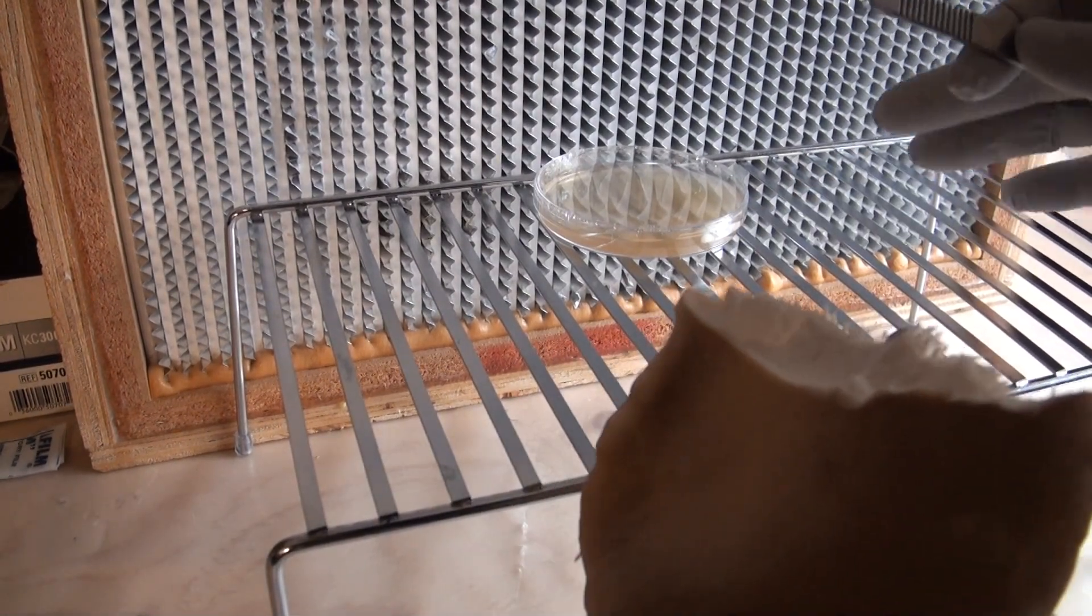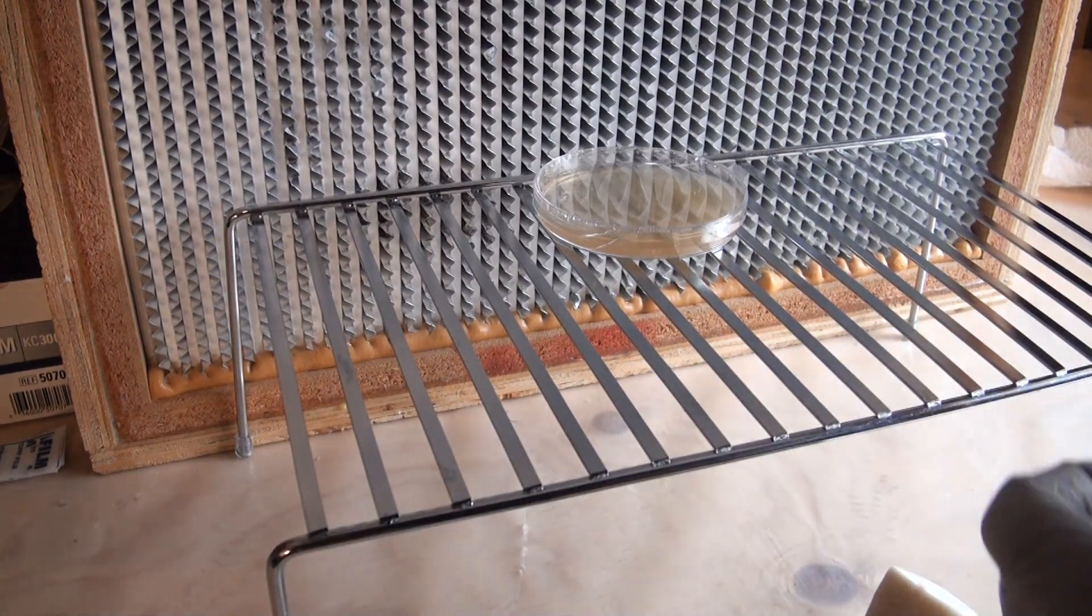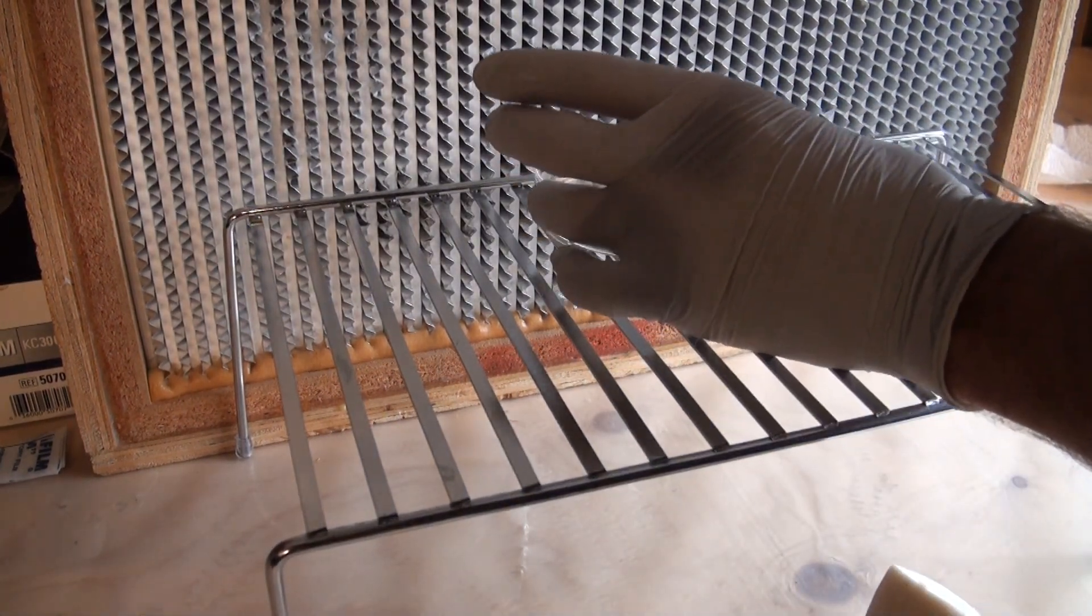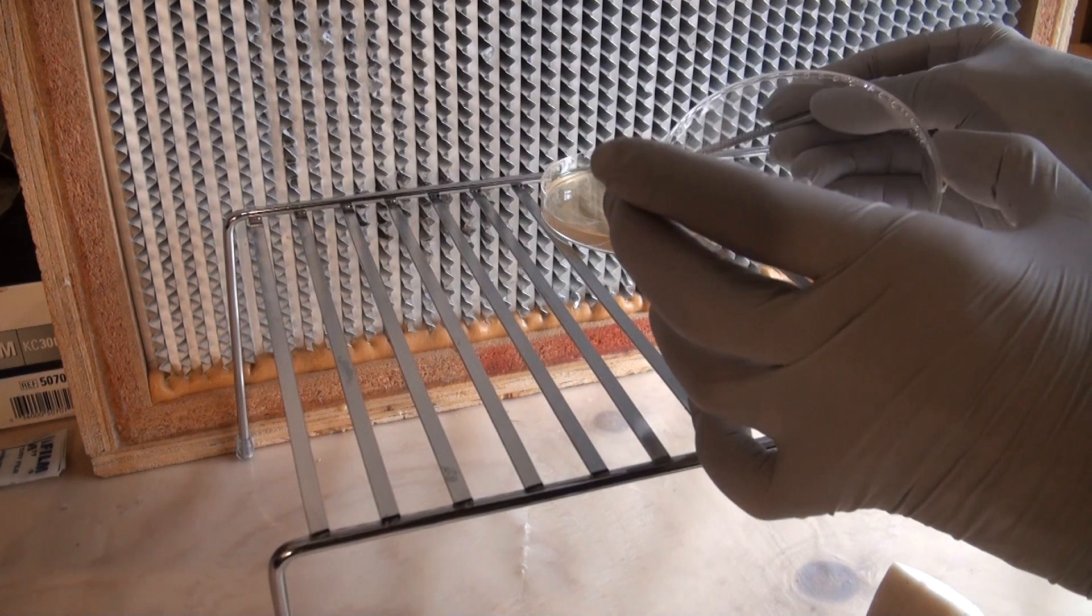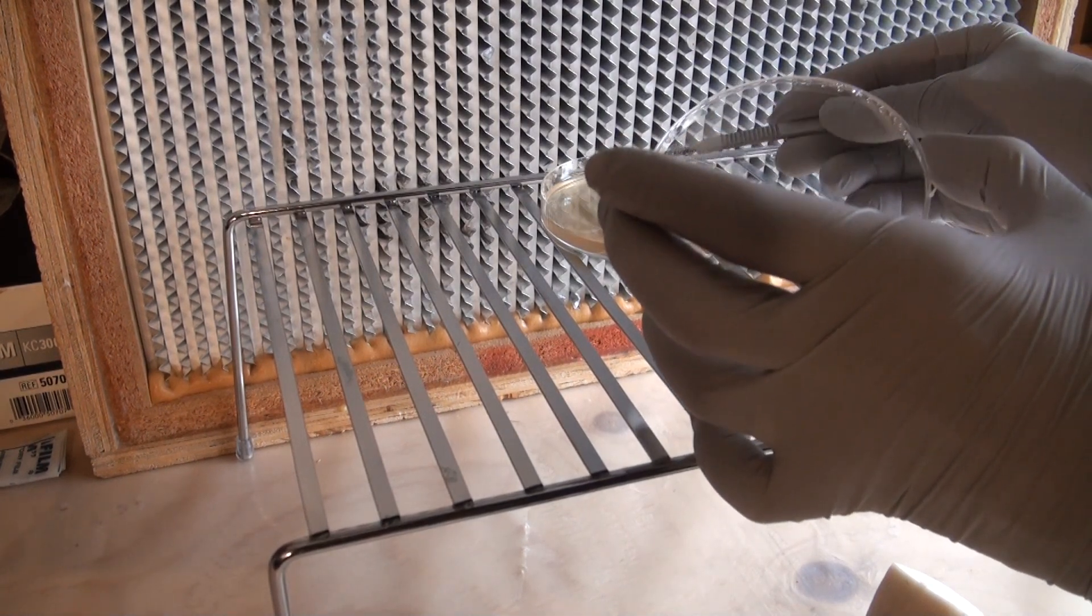Now you want to make sure you keep the dirtiest things downstream and the cleanest things upstream. So I got the mushroom fruit body downstream and the agar dish upstream. I'm going to go ahead and scrape some of this tissue out from inside of the mushroom and go ahead and place it on the dish.